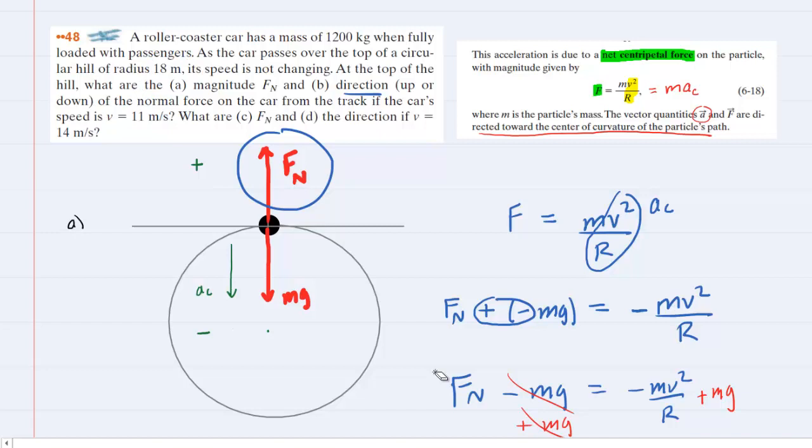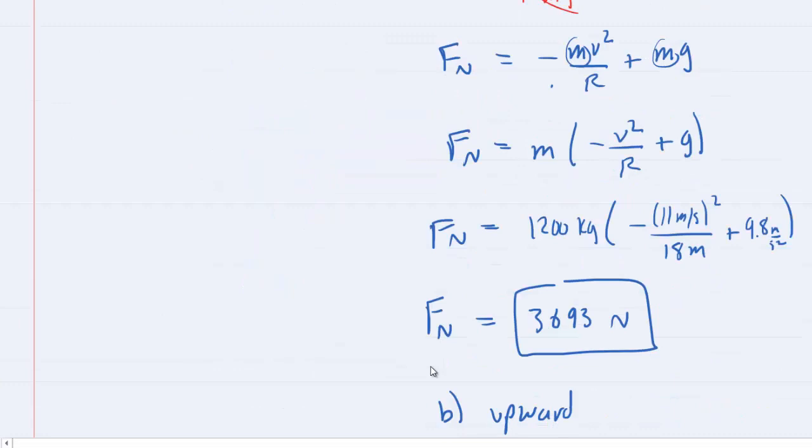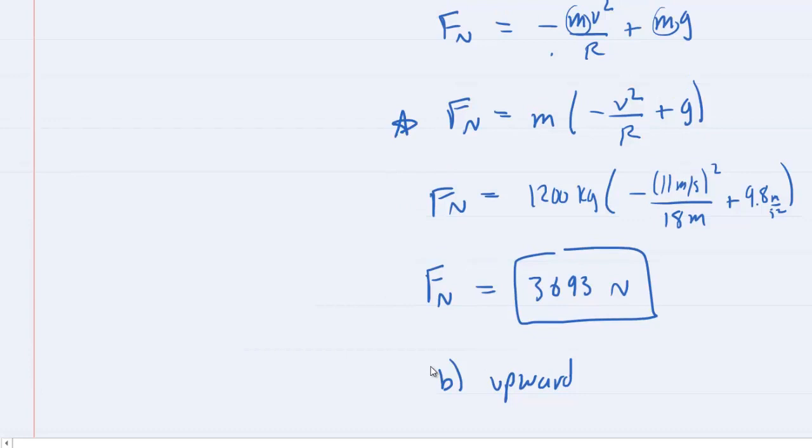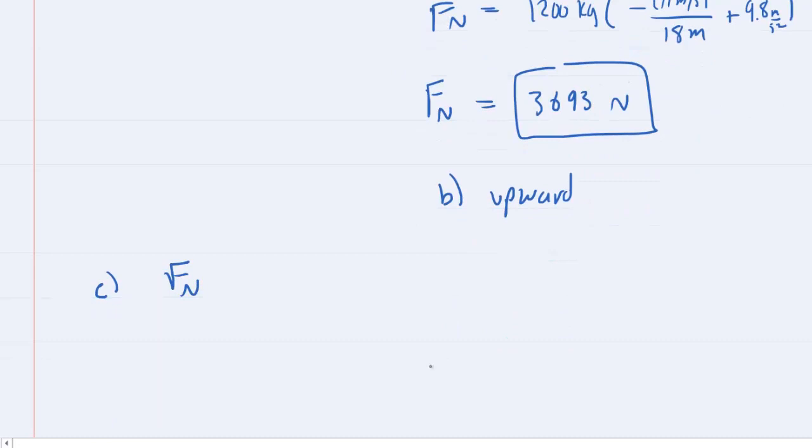And in those parts of the question, we are now assuming a different speed. So this time, the speed has been increased to 14 meters per second. We're going to leave our free body diagram in the same manner. So right now we're assuming the normal force is still pointing upward. Let's apply the equation that we obtained in parts A and B, and we'll see how the normal force works out. So we're going to once again say that the normal force is equal to the mass times negative speed squared over radius plus g.